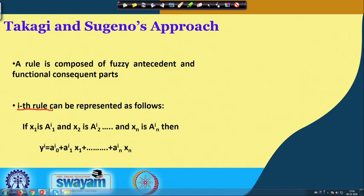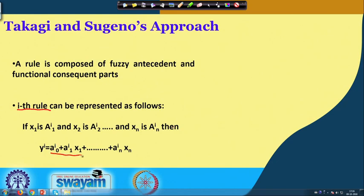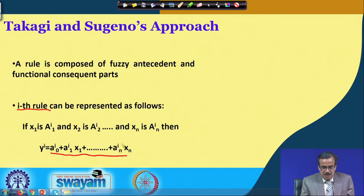The rule is written like this: if x1 is a1i and x2 is a2i and so on up to xn is ani, then yi is nothing but a0i plus a1i·x1 plus further terms and the last term is ani·xn.